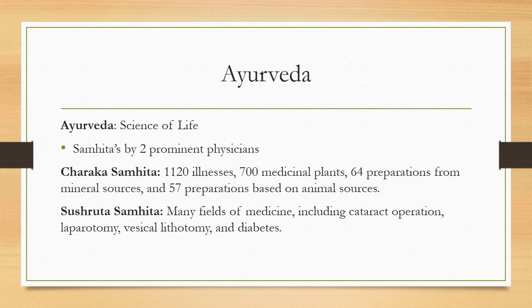Agnivesha means science of life, and was written by two prominent physicians: Charaka Samhita and Sushruta Samhita. Charaka Samhita wrote about approximately 1,120 illnesses, 700 medicinal plants, 64 preparations from mineral sources, and 57 preparations based on animal sources. Sushruta Samhita wrote about many fields of medicine including cataract operations, leprotomy, vesicle lithotomy, and diabetes.